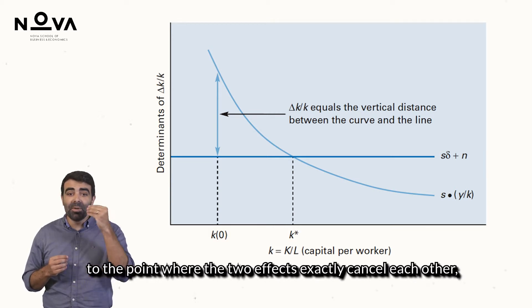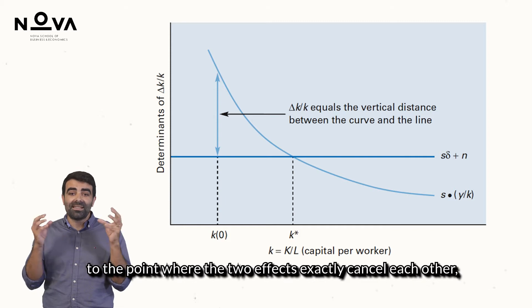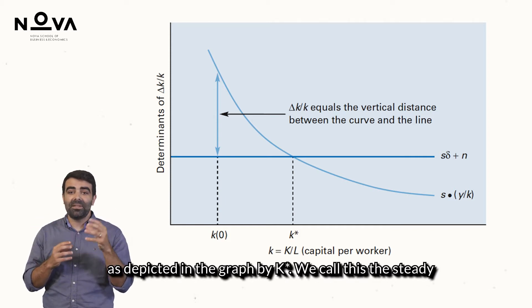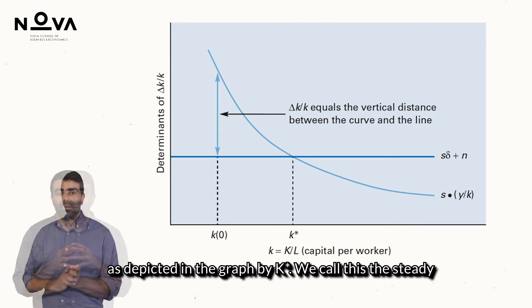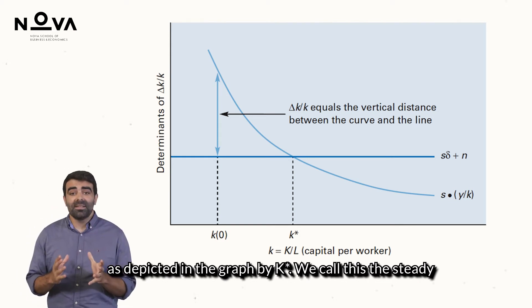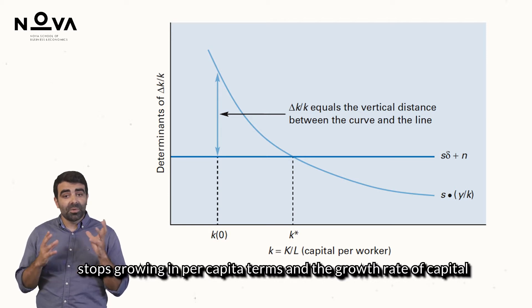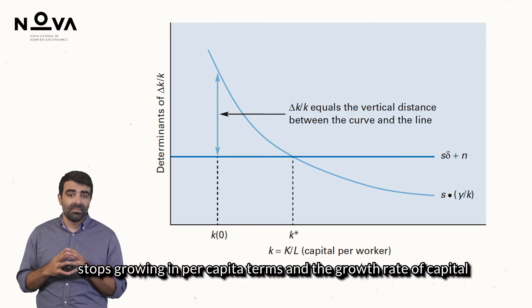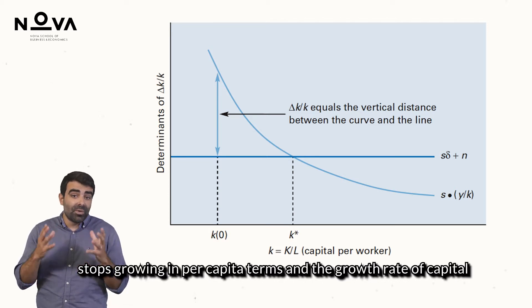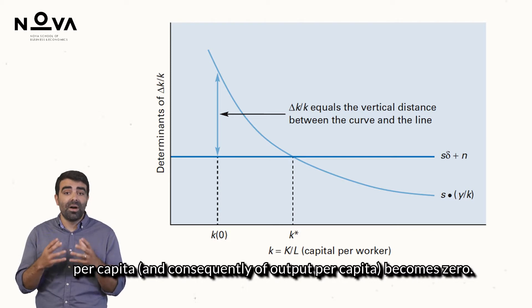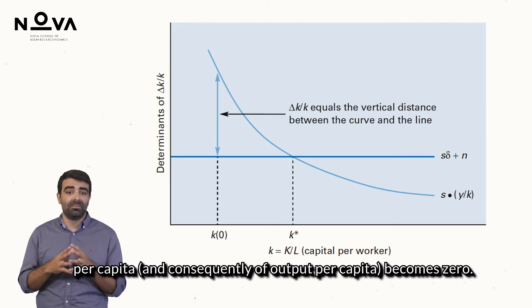Up to the point where the two effects exactly cancel each other, as depicted in the graph by K-star. We call this the steady-state capital, precisely because at this point the economy stops growing in per capita terms. The growth rate of capital per capita, and consequently of output per capita, becomes zero.